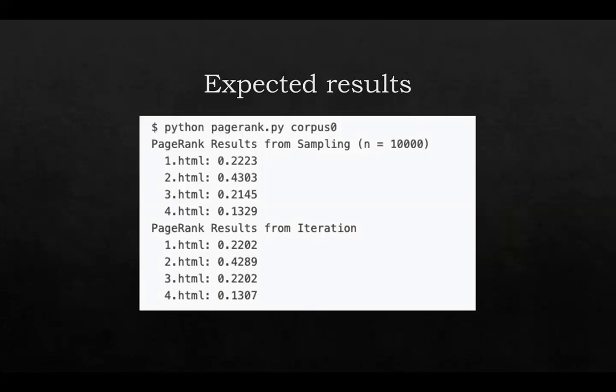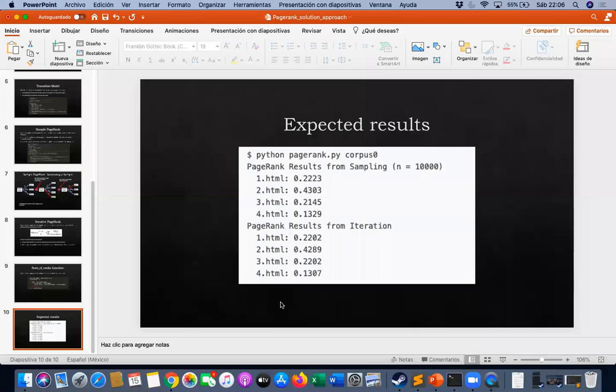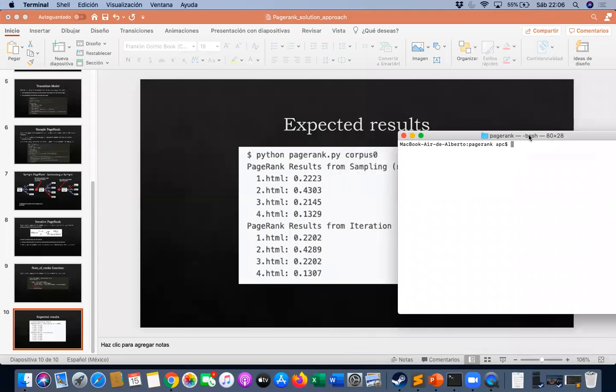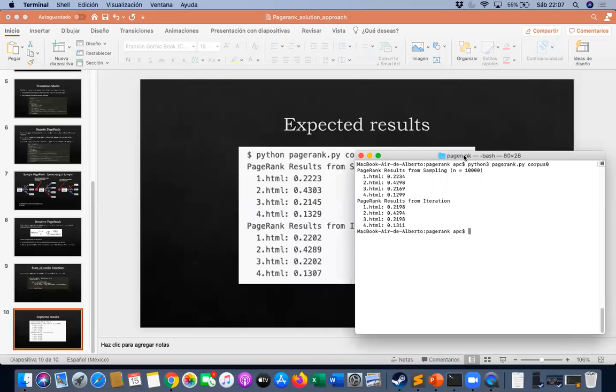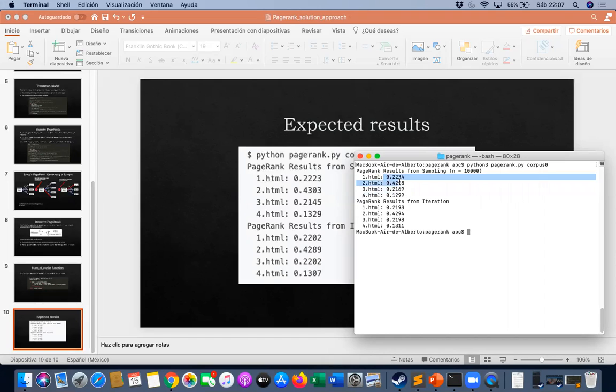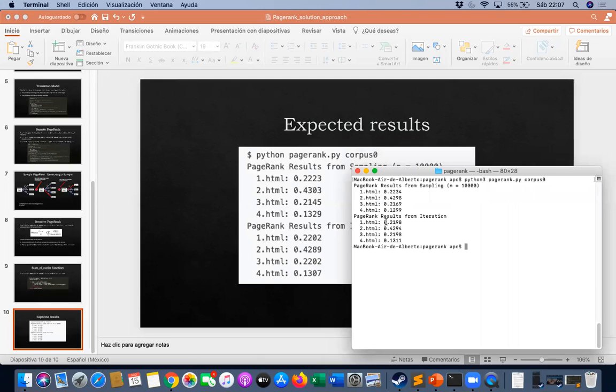And then, well, these are the expected results that we are about to see. So let's go ahead and run our code and see if we get them. So we can say Python three, pagerank.py from corpus zero. And there they are, the exact same result. There is a slight variation here, but it's normal because these are the samples, which we're expecting to get at random. But the iteration values are exactly .001 variation or less.